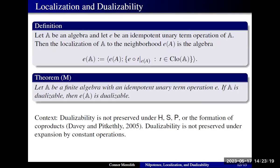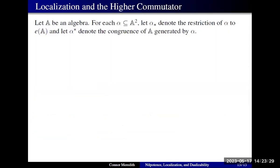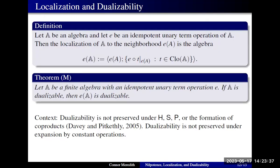That's our connection between localization and dualizability. The title has three topics, and I tried to talk about each pair. I also wanted to talk about localization and the higher commutator. It's natural to ask: when we go through this localization process, how does super nilpotence come into play, and how is the higher commutator affected by localization?